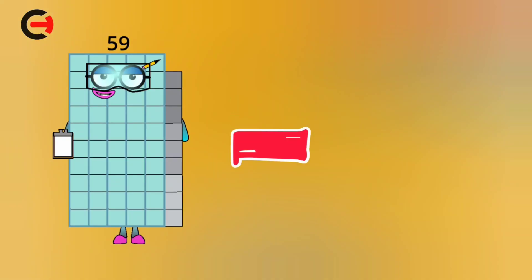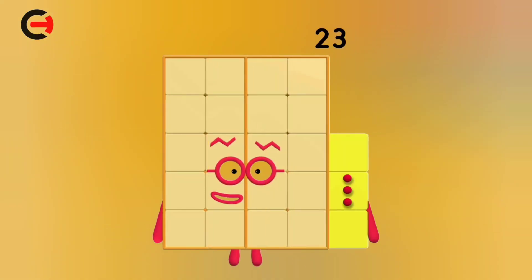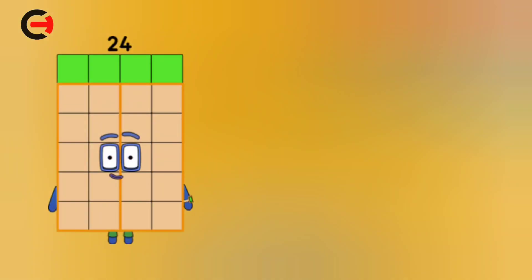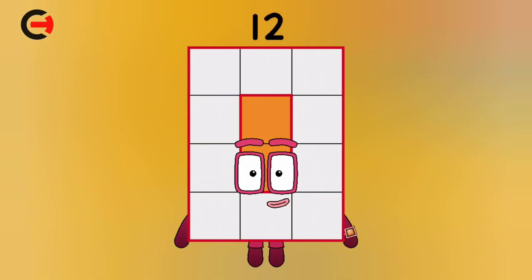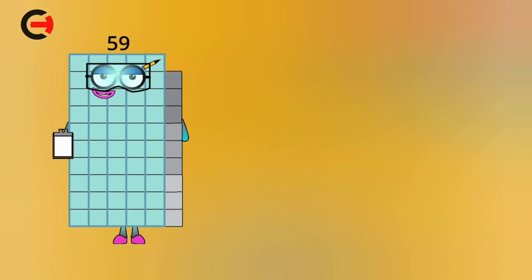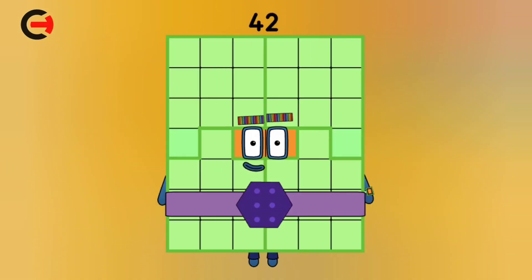59 minus 36 is equal 23. 24 minus 12 is equal 12. 59 minus 17 is equal 42.